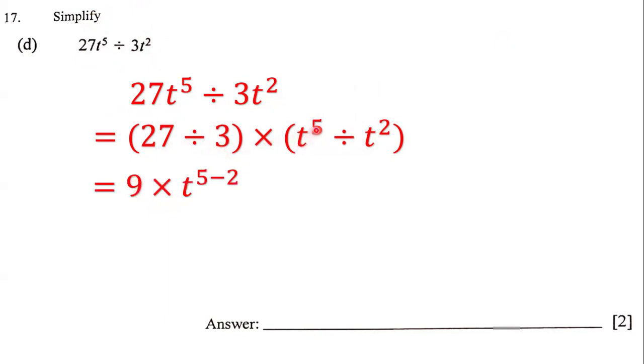Next, we have t to the fifth power divided by t to the second power. Notice here that t is here, and t is also here, which means that these two terms have the same base, and the same base is t.